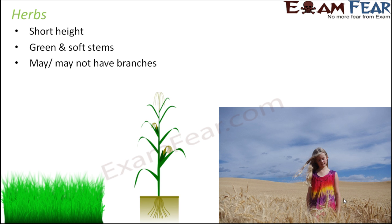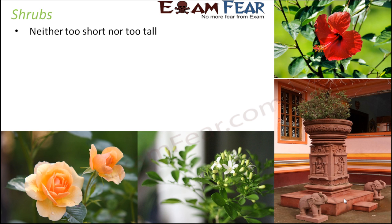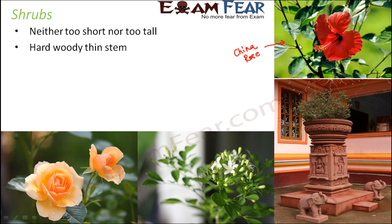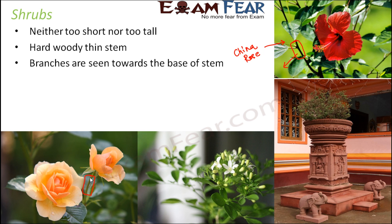When it comes to shrubs, these are medium sized plants — neither too short nor too tall. They have hard, woody, thin stems, which can be brown in color. Looking at the China rose, also called hibiscus, the stem is brown and woody — even though it is thin, it is quite strong. The stem of a rose plant can be green or brown, but it is also hard and woody.